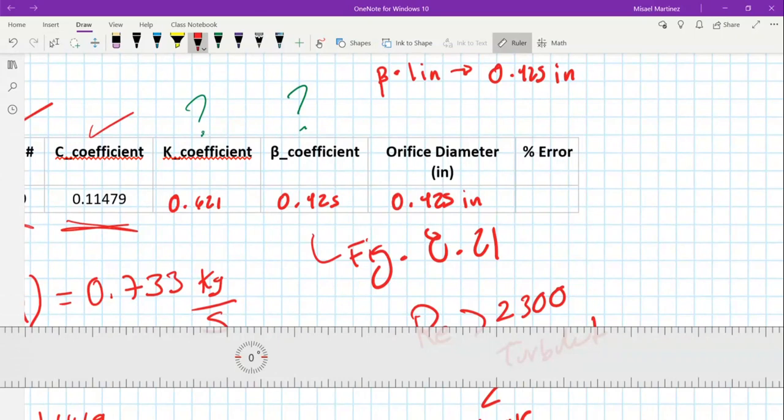That's how we find the beta coefficient. I will post this on Blackboard. I hope it helps. If you have any questions, just let me know.